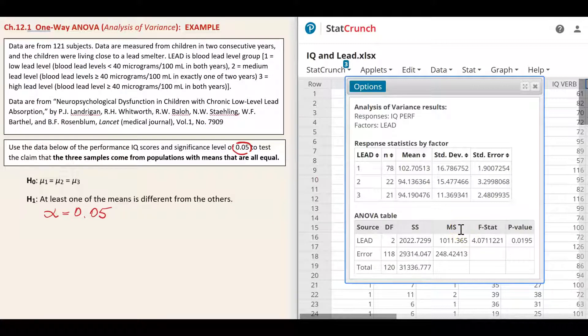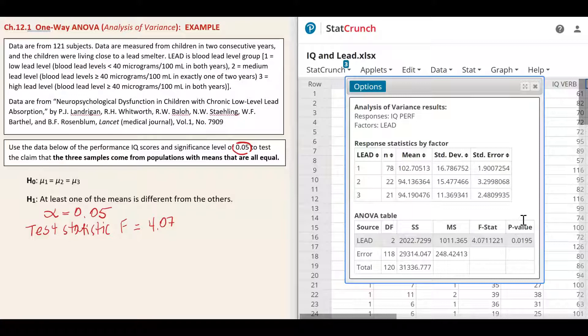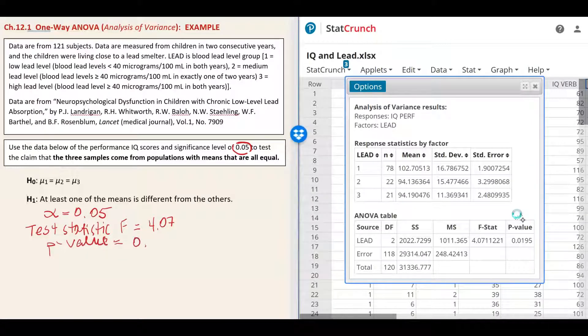In one way ANOVA we use new test statistic F statistic. Let's write it down. F is equal 4.07 rounded to two decimals and p value is equal 0.0195. We can round it to two decimals as well, 0.02. We will talk about F statistic in a minute. Right now let's look at p value and compare it to significance level of alpha. P value is less than alpha of 0.05 so we reject the null hypothesis of equal means.